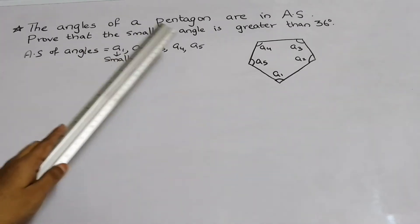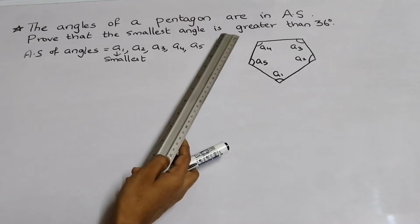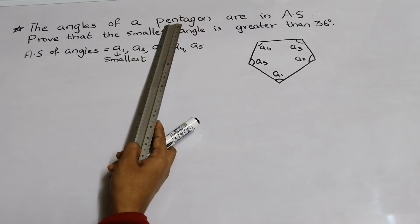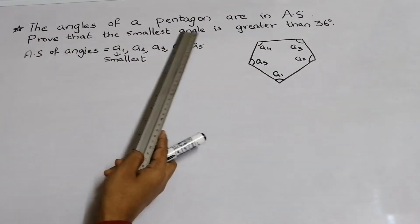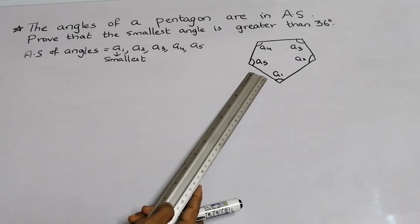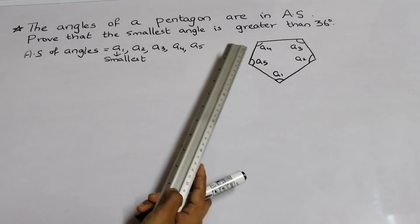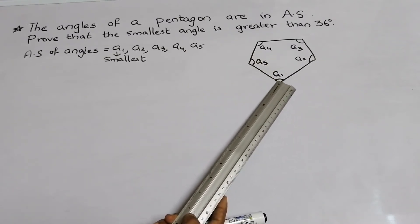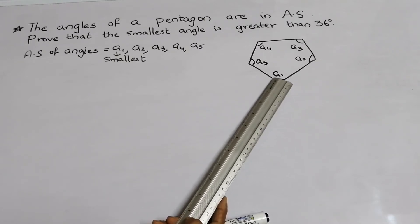The angles of a pentagon are in arithmetic sequence — to prove that the smallest angle is greater than 36 degrees. Pentagon means a five-sided polygon. They did not mention regular pentagon, so I just roughly drew one pentagon. We have to prove that the smallest angle, which I consider as A1, is greater than 36 degrees.